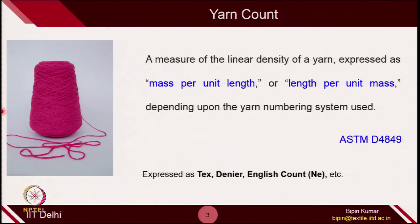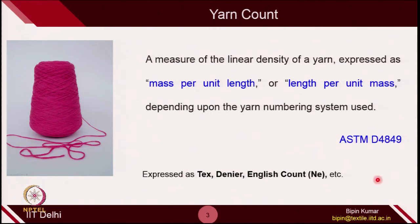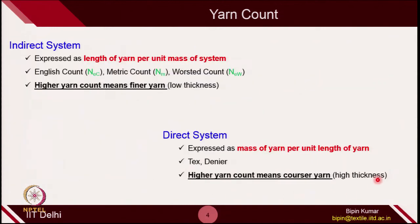In terms of standards, if you see yarn counts, there are a number of yarn types you can find in the textile industry — either cotton yarn, polyester yarn — and all of these can vary in terms of yarn count. Yarn count is a kind of linear density expressed as either mass per unit length or length per unit mass, depending on what yarn numbering system is used. Some common terms you might have heard are tex, denier, English count, metric count, and worsted count.